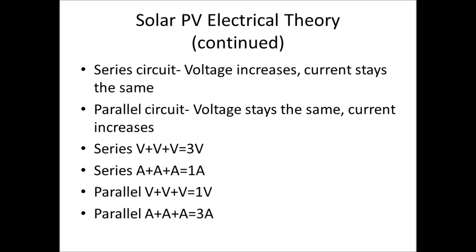But in a series circuit, the current stays the same. So those same three batteries, if they are one amp each, one amp plus one amp plus one amp only equals one amp in a series circuit regarding current.